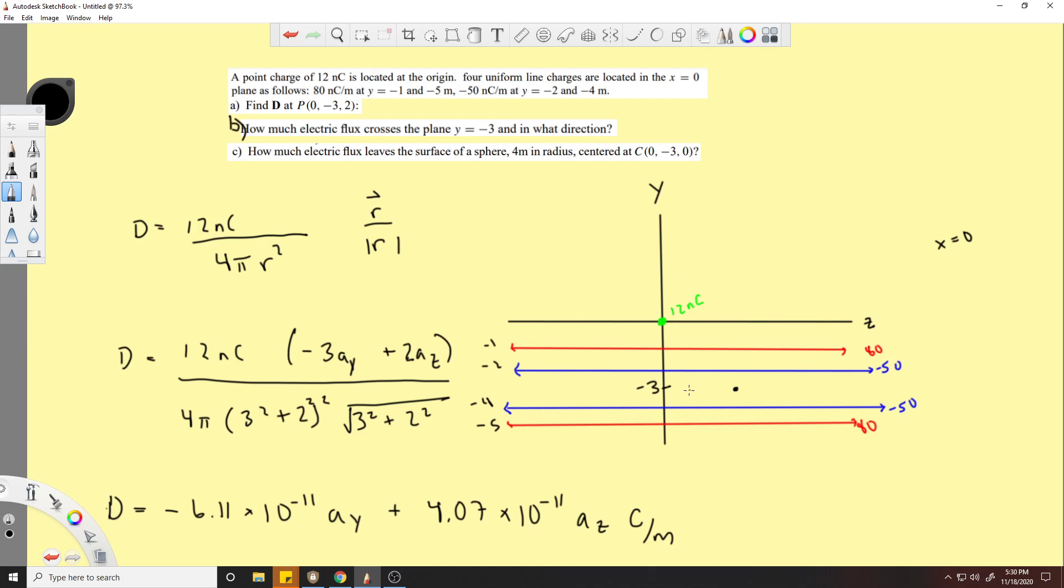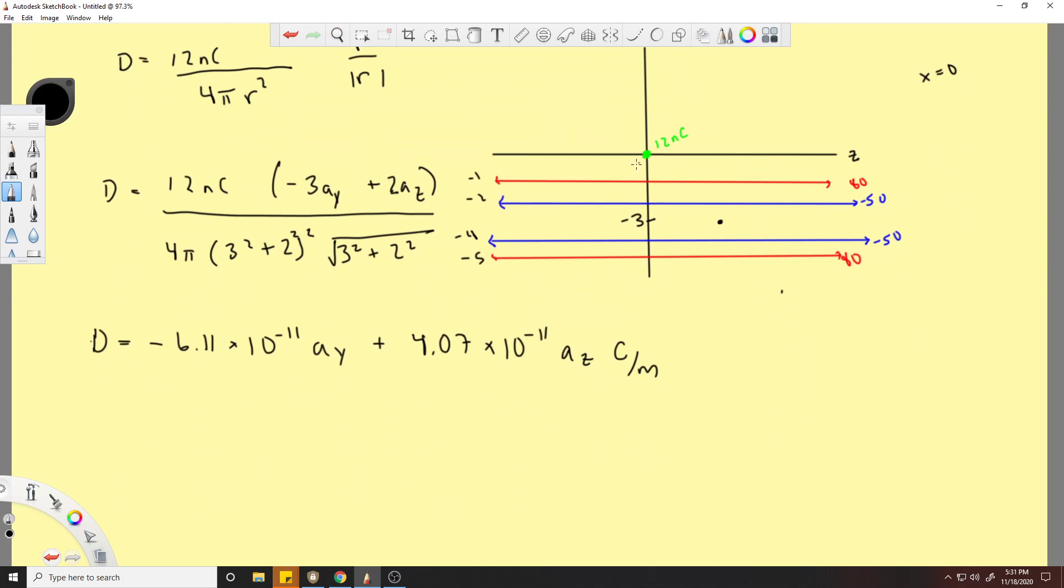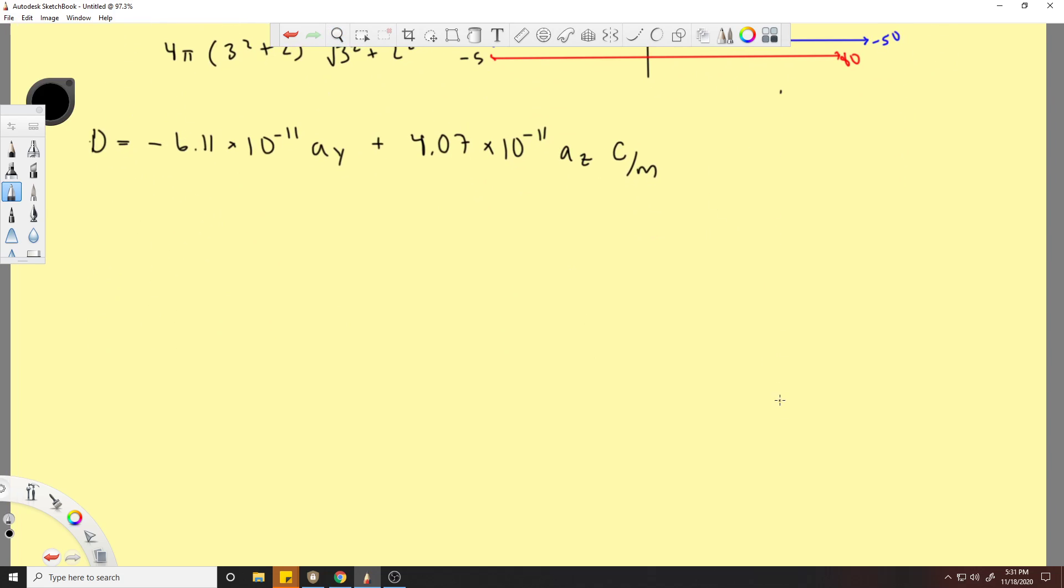How much electrical flux crosses the y equals negative 3 plane and in what direction? Well we know that these fluxes already cancel each other at this plane. This is how we discovered that we didn't need to use any math for these line charges in the first problem. So we know that we're only dealing with this point charge again.